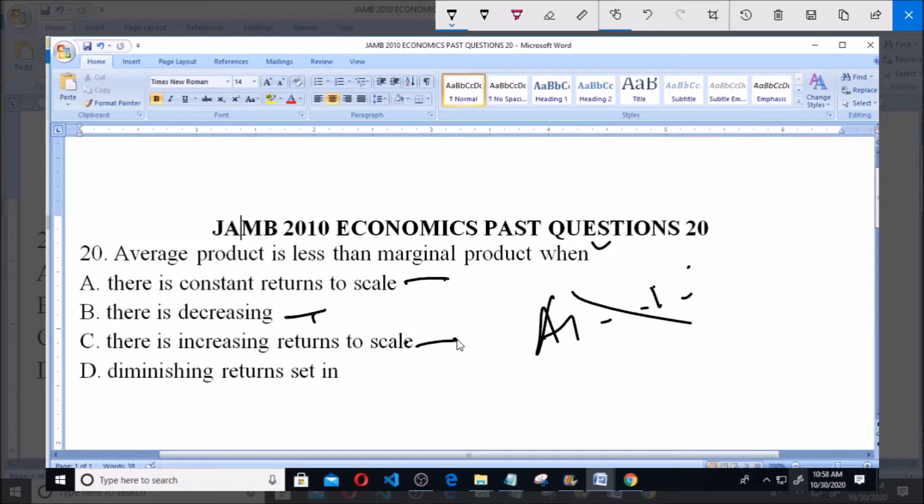So the law of diminishing returns states that as successive units of a variable factor, either labor or capital, is applied to a given fixed factor like land, output will increase at first.